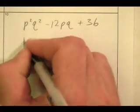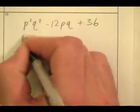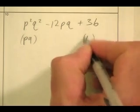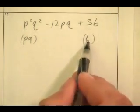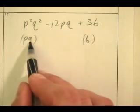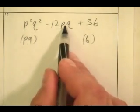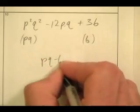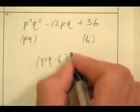Next problem — gets a bit trickier. Is the first term a perfect square? Yes. Is the last term a perfect square? Yes. This times this is 6pq — is the middle term double that? Yes. So this factors as (pq minus 6)². Very nice.